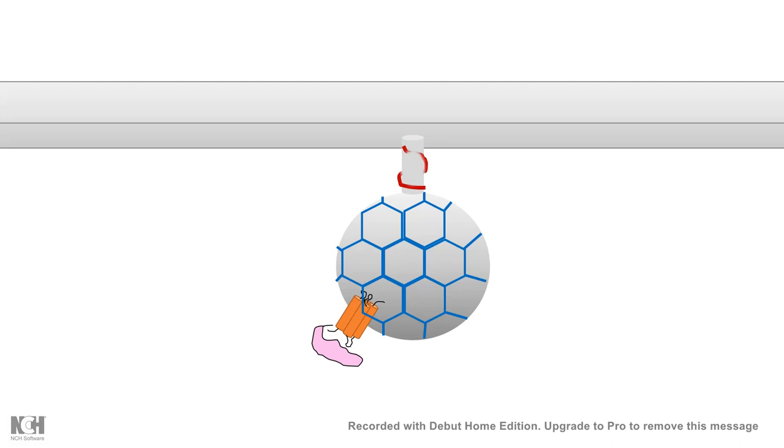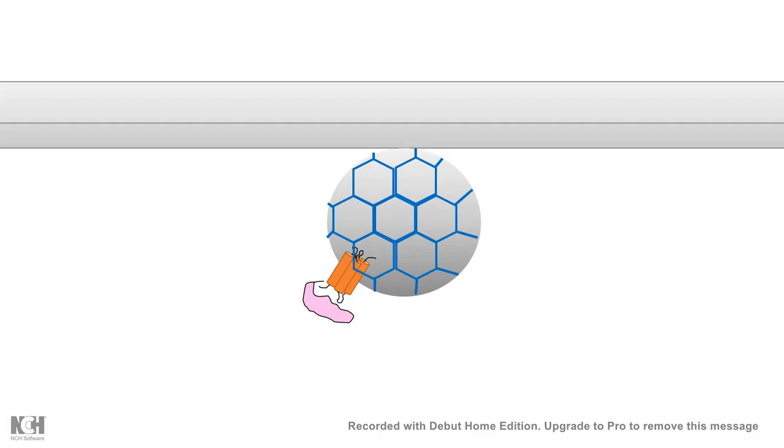Specialized protein such as dynamin associates there, and dynamin is a GTPase and it sort of pinches off the vesicle from the membrane. As a result, the vesicle is released from the membrane and it is endocytosed.